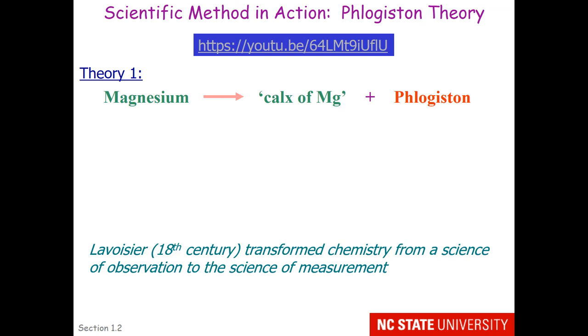If you have not enjoyed the stoichiometry problems, the person to be annoyed with is Lavoisier, who in the 18th century transformed chemistry from a science of observation to the science of measurement. He modified the experiment so that he measured the amount of magnesium being burned as 24 grams and then measured the shell of the magnesium left over as being 40 grams.